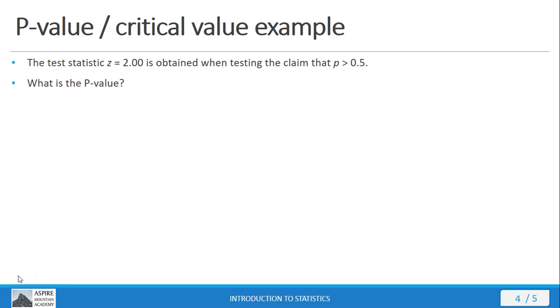Again, notice here there's no summary stats, there's no actual sample data. All we have is a test statistic, but that's all that we need. The test statistic, and we have the claim, so that we can get the alternative hypothesis, because that's going to tell us what type of test we have. Left tail, right tail, or two tail.